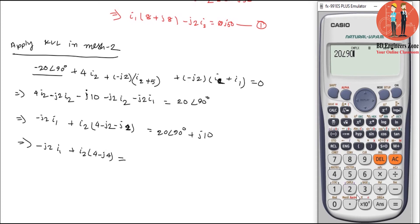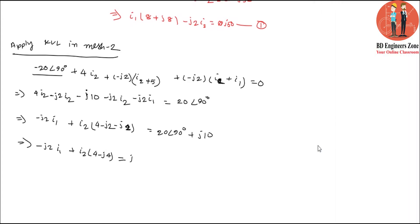We now have i2 plus 10i in complex form. Writing the complex number equations — do the number equations.